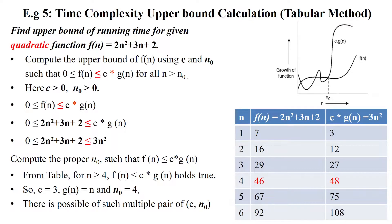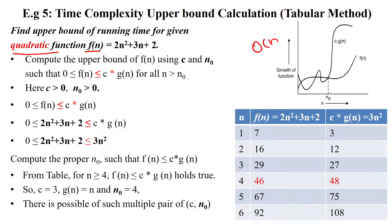Welcome to the time complexity upper bound calculation session using the table method. Here a quadratic function is given as f(n) = 2n² + 3n + 2. For calculating the upper bound time, we use Big O of n.